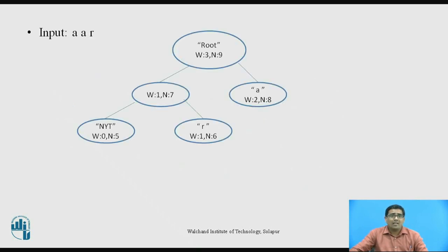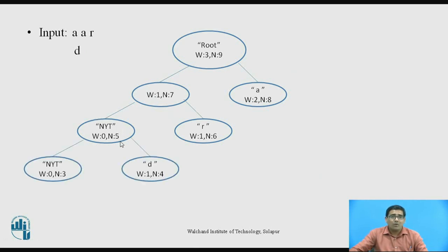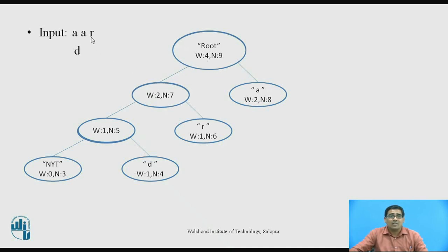After transmitting A, A, R, the next symbol is D. Again it is added to the left-hand side of the NYT, so NYT becomes weight 0 and N=3, and D is added to the rightmost side with weight 1 and N=4. After adding D, the NYT moves down, weights update: 0 plus 1 equals 1, then 1 plus 1 equals 2, then 2 plus 2 equals 4. This is the tree after transmitting A, A, R, D.